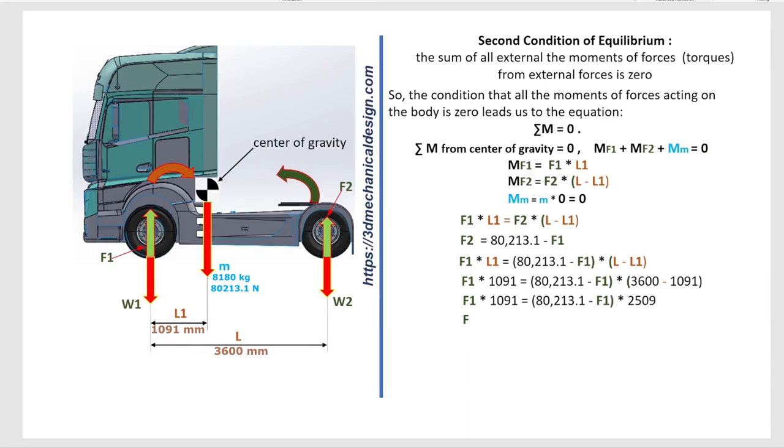F1 times 1091 equals 201254667.9 minus F1 times 2509. F1 times 1091 plus F1 times 2509 equals 201254667.9. F1 equals 201254667.9 divided by 3600 equals 55904 Newtons.